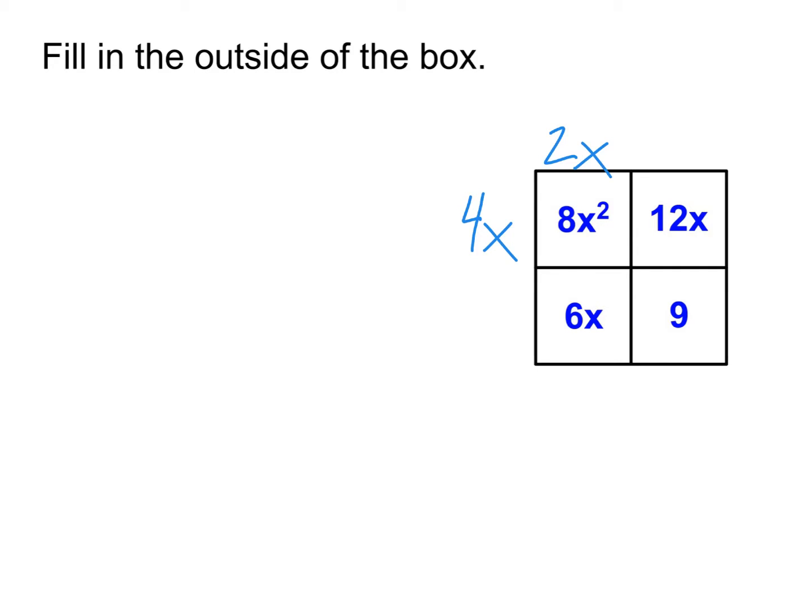Knowing that, 4x times what is 8x squared? 2x. Let's take a look then at the 12x over here. 4x times what is 12x? 3. And for our last one, we can be looking at 2x times what is 6x, for instance. Ends up being 3. You could also have been looking at 3 times what is 9, or you could have just said what factors out of both of those terms.